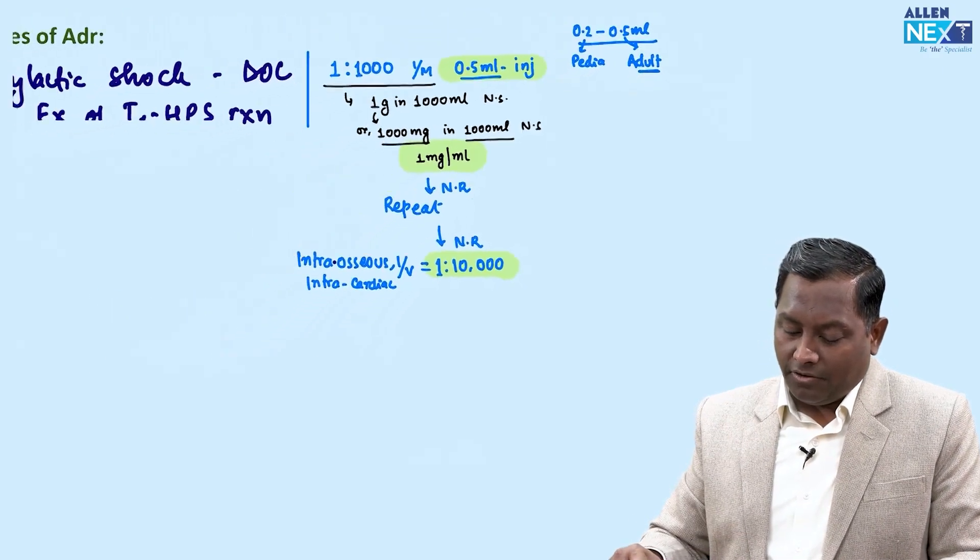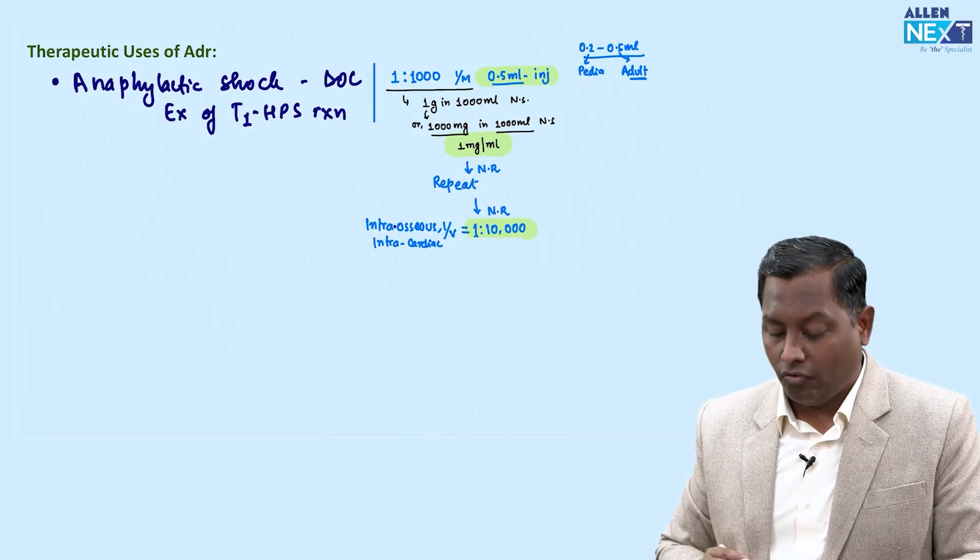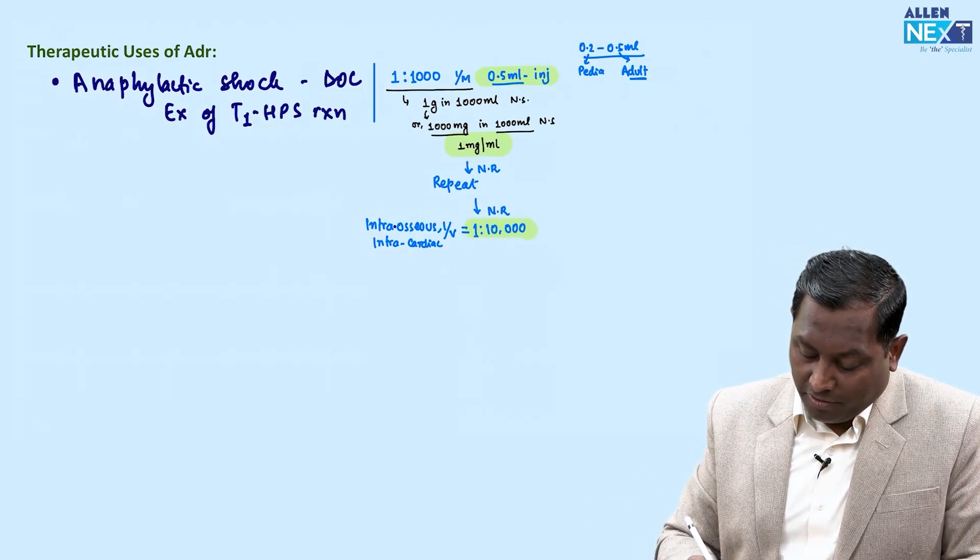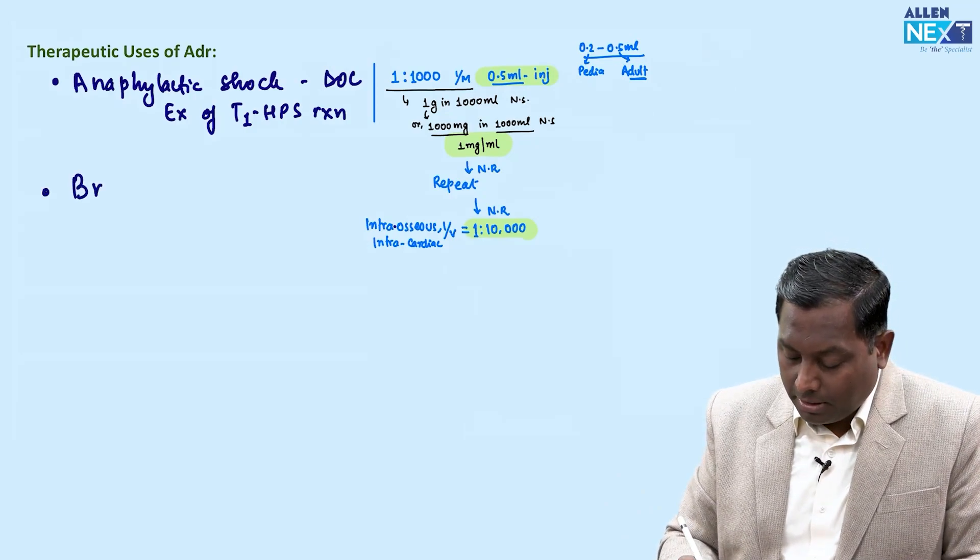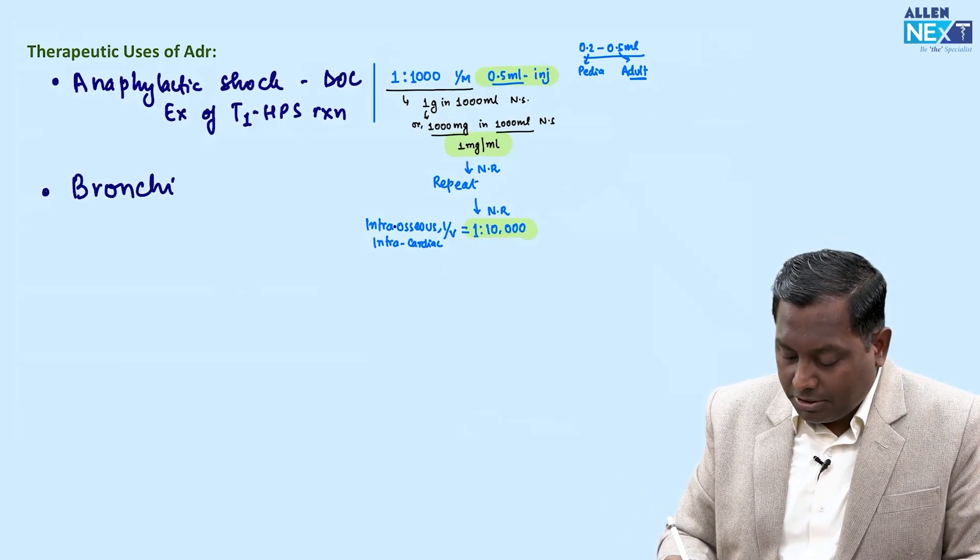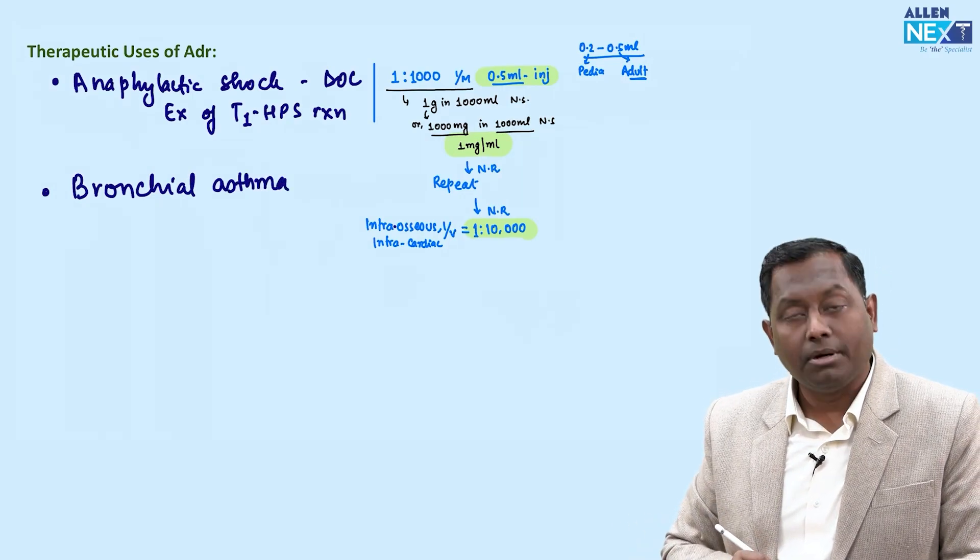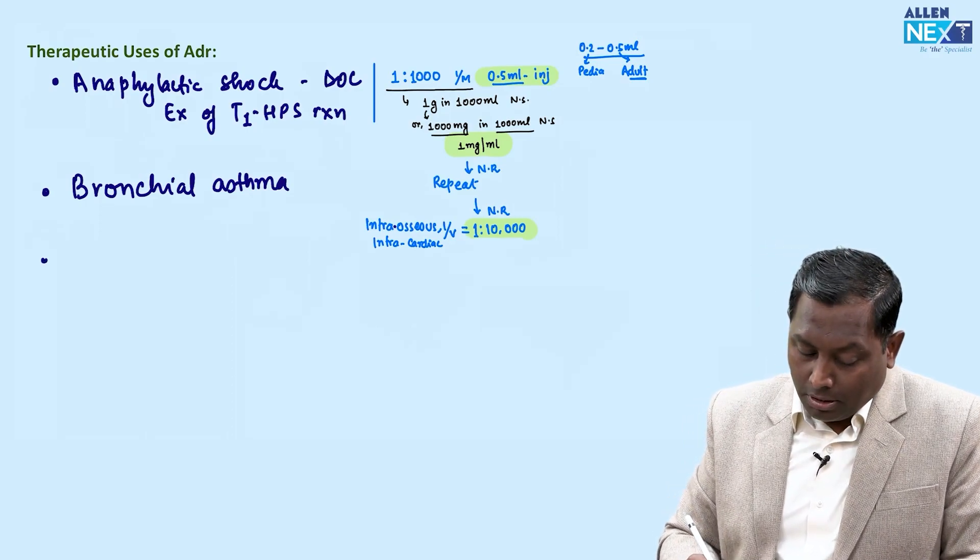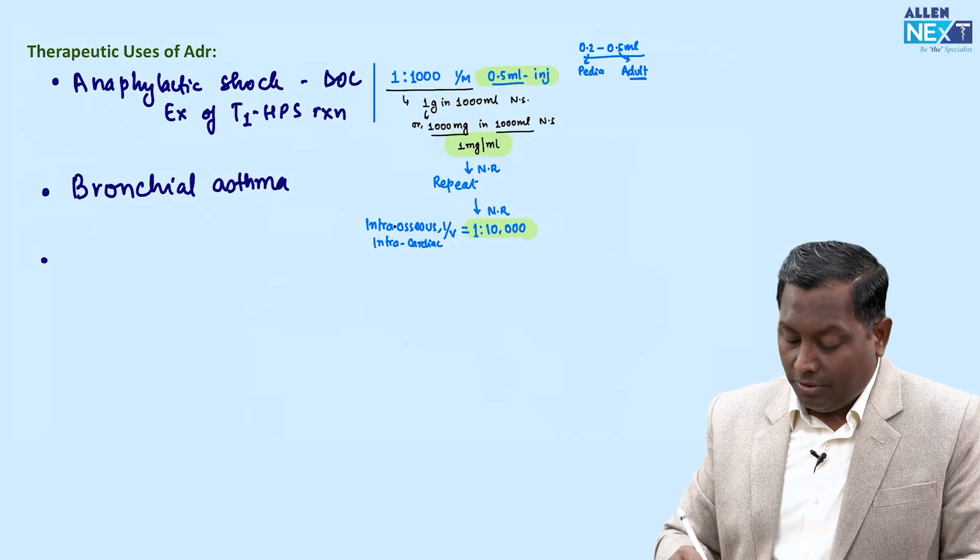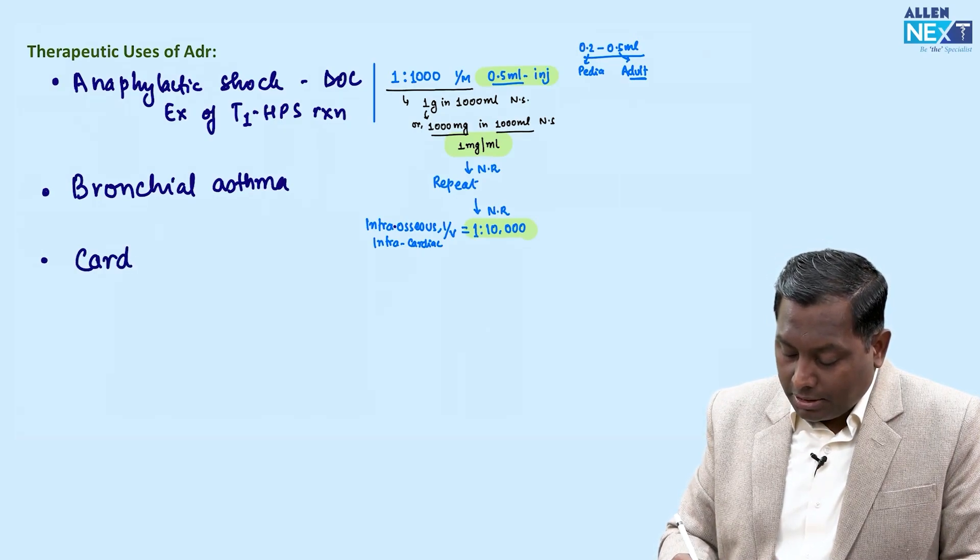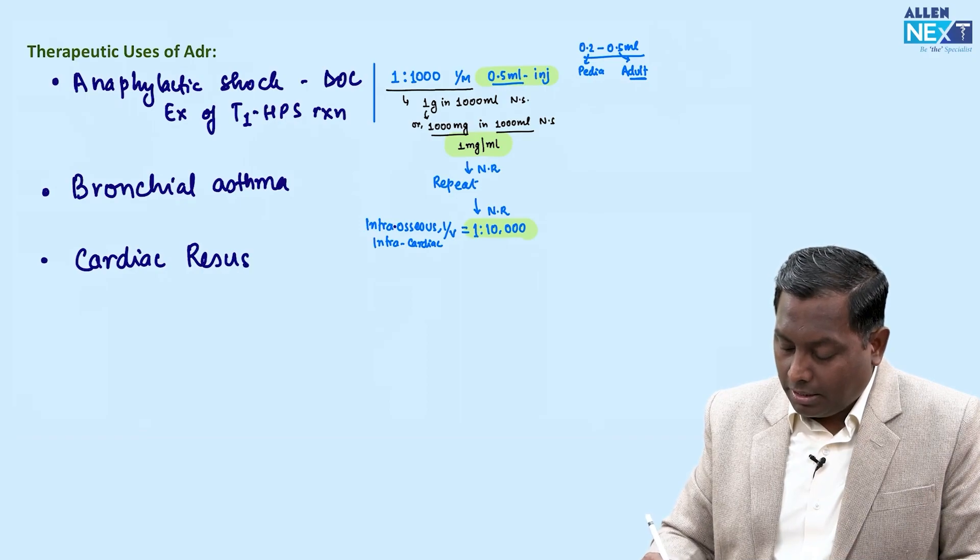Apart from anaphylactic shock, where else can we use it? We can use it in bronchial asthma in pediatric and adult populations because of their bronchodilating property. In conditions like croup, we also use it.